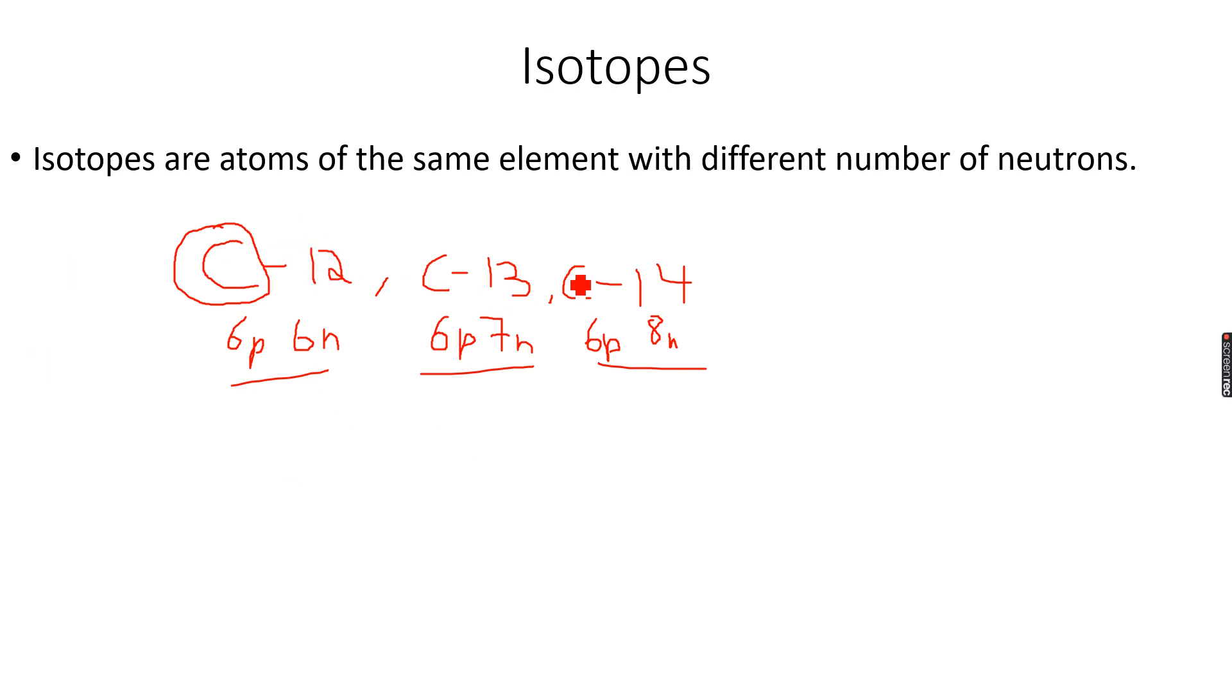And carbon 12, 13 and 14 tells us that because we get these nucleon numbers because six plus six gives us 12, six plus seven gives us 13 and six plus eight gives us 14. So this is how we get the nucleon number or relative atomic mass.